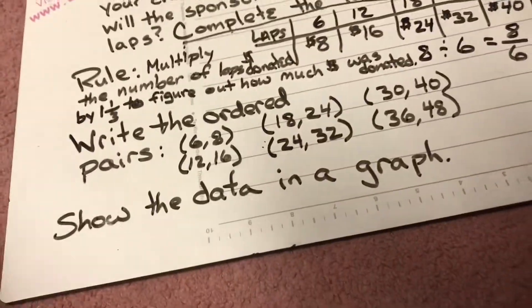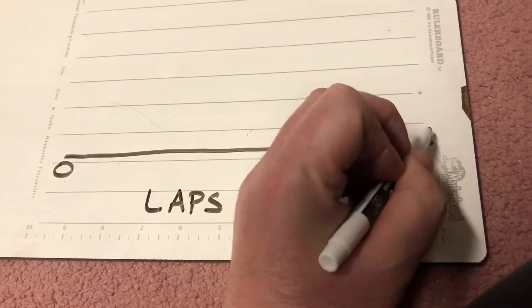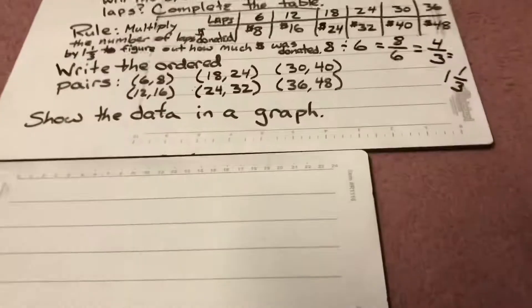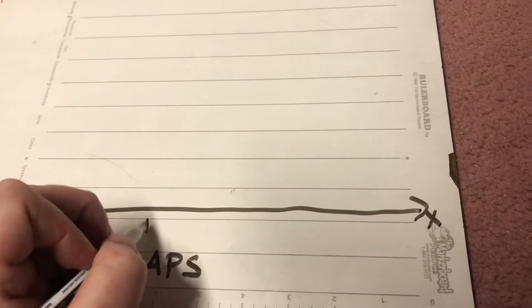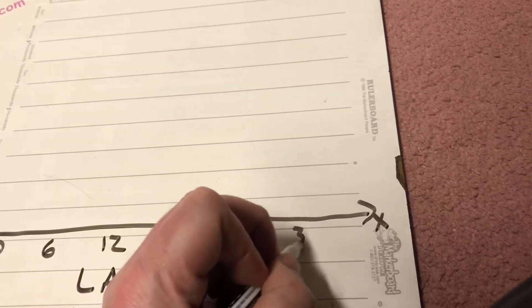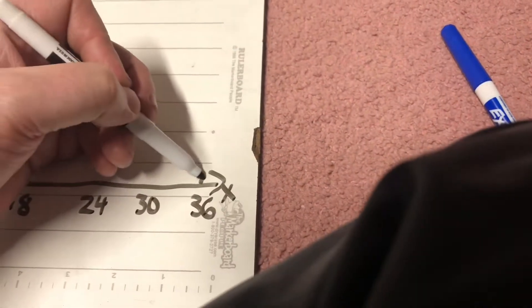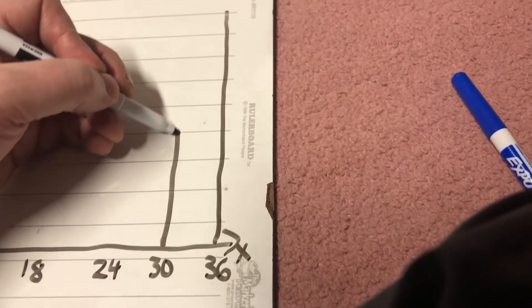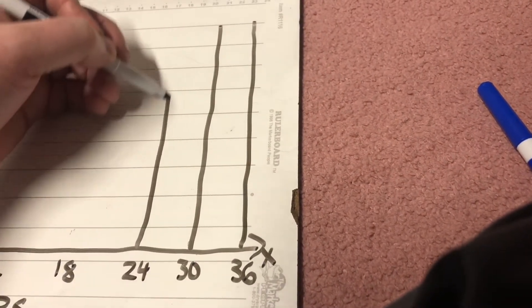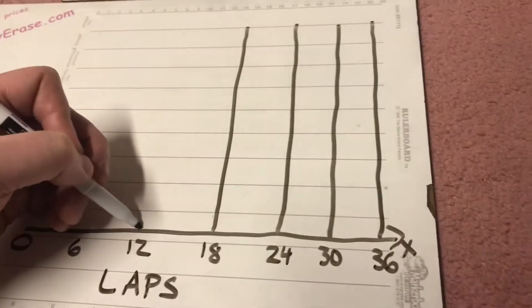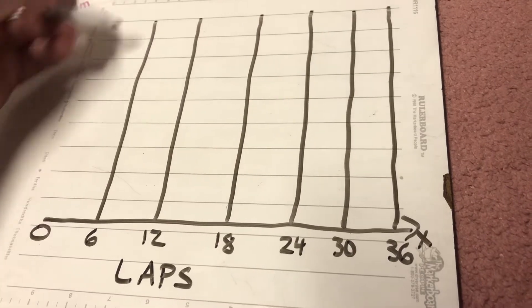Now I have to make a graph. My x-coordinate is going to be the laps, so I'll label that axis 'laps.' Starting at zero and going in increments of six: six, twelve, eighteen, twenty-four, thirty, thirty-six. I'm not worried about being perfect, but I am worried about being neat and making it easy to read — making it big enough so it's clear.